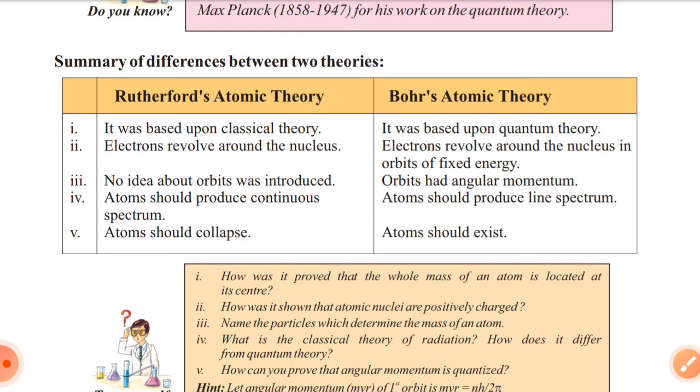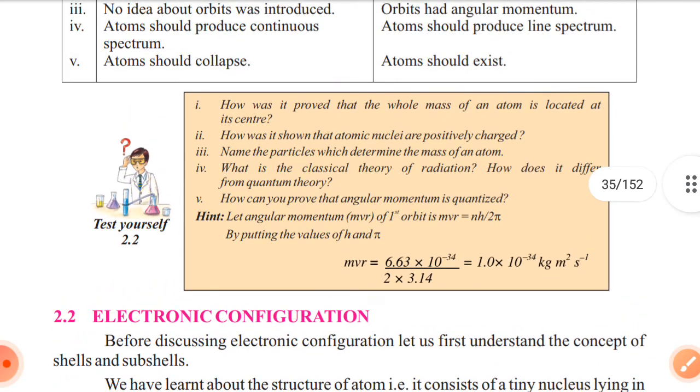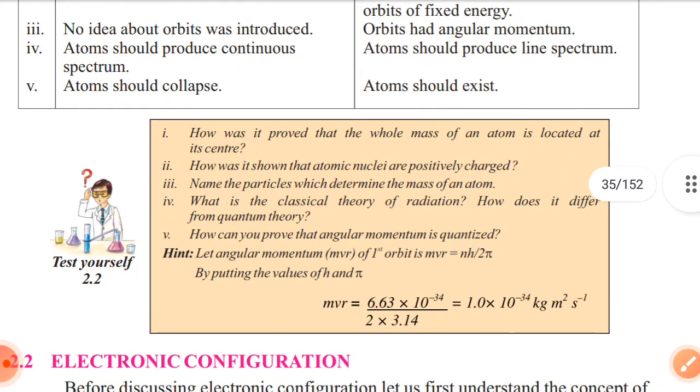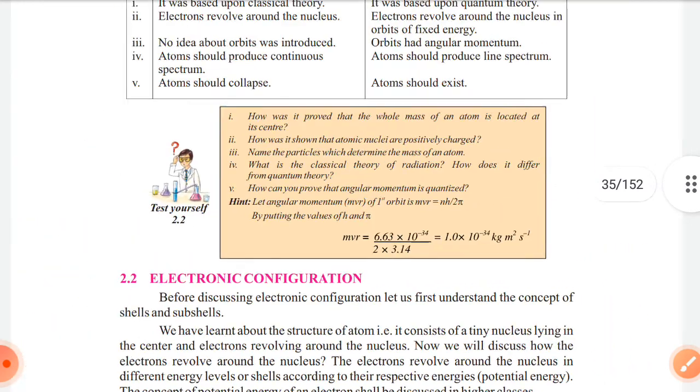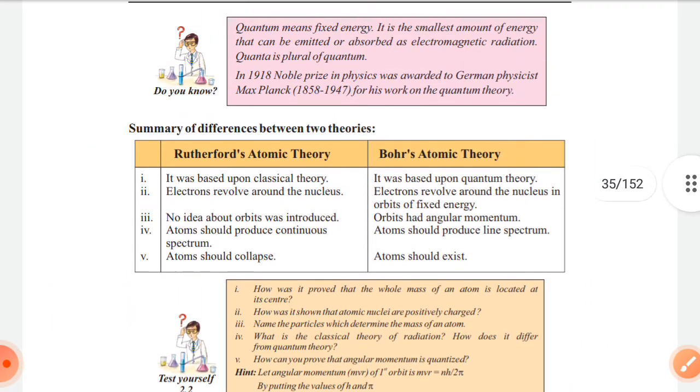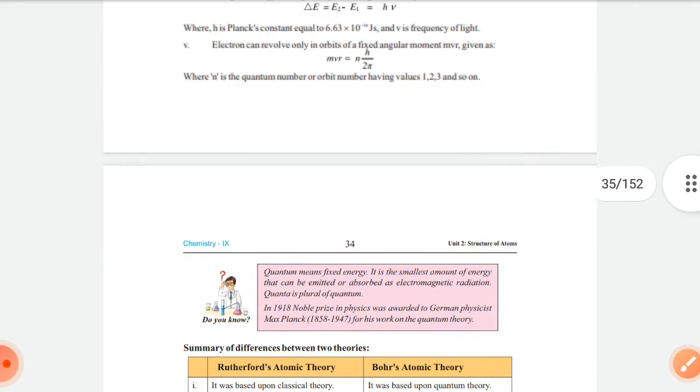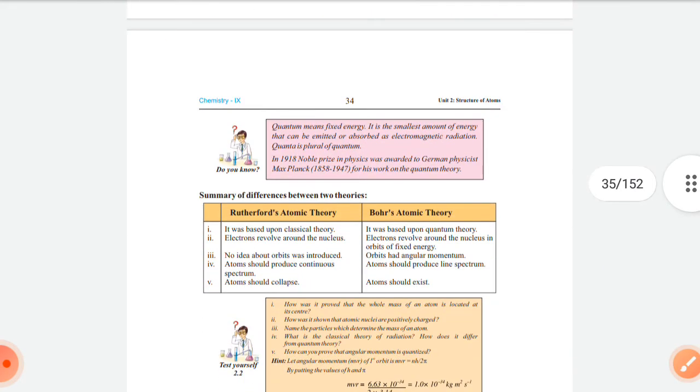Here are some exercise questions: How was it proved that the whole mass of an atom is located at the center? How was it shown that atomic nuclei are positively charged? Name the particles which determine the mass of an atom. What is the classical theory of radiation? How does it differ from quantum theory? How can you prove that angular momentum is quantized? We have studied Rutherford and Bohr theories, and beyond that Proton discovery theories.